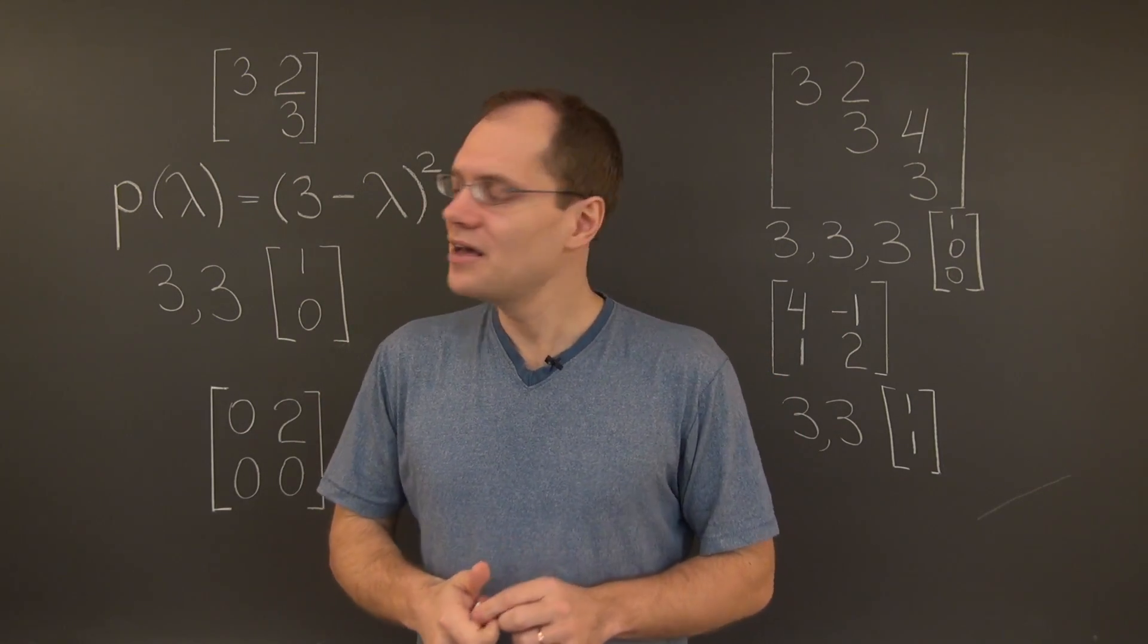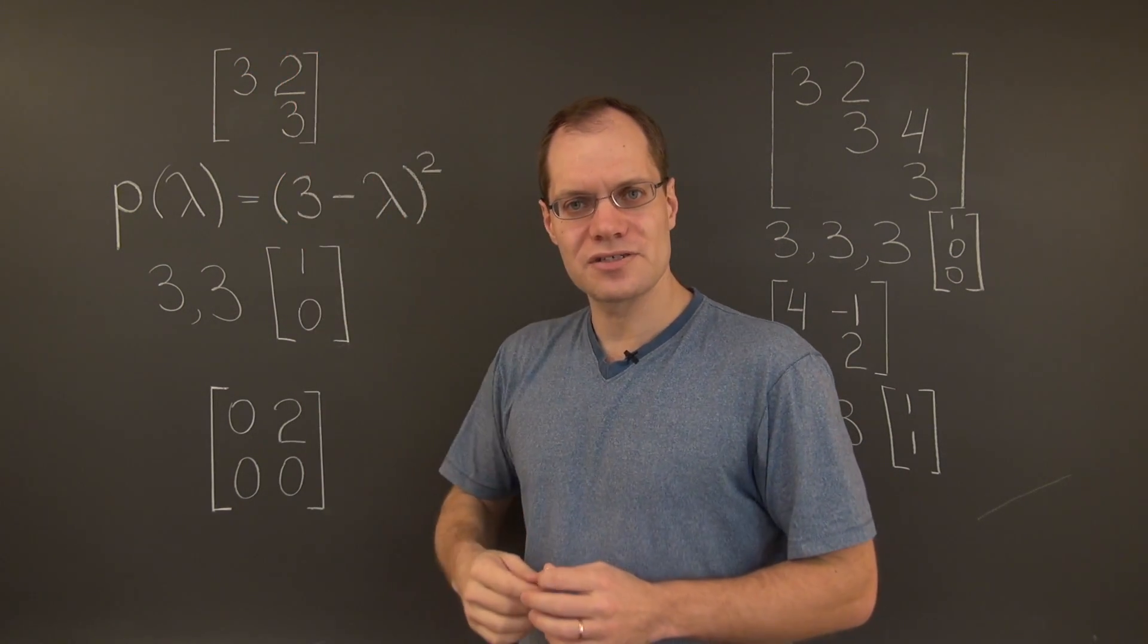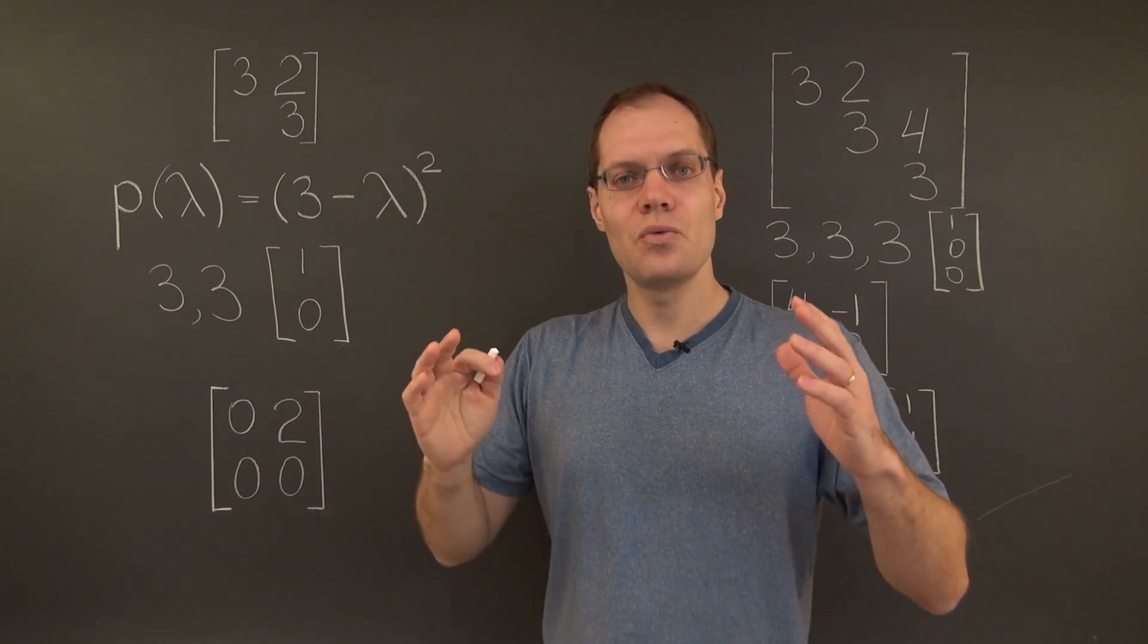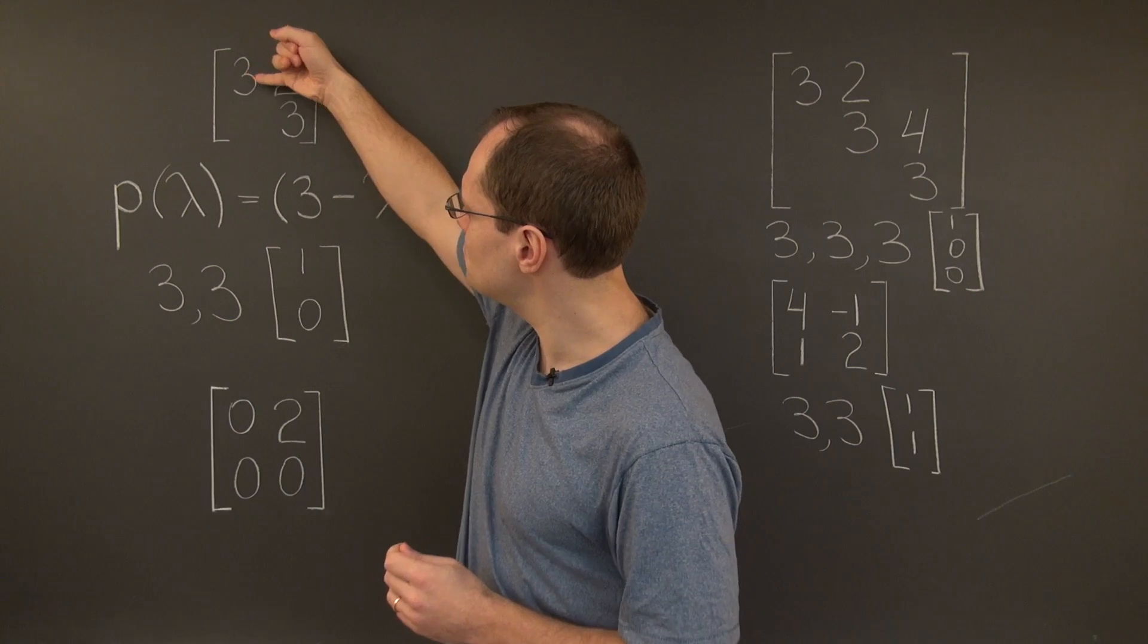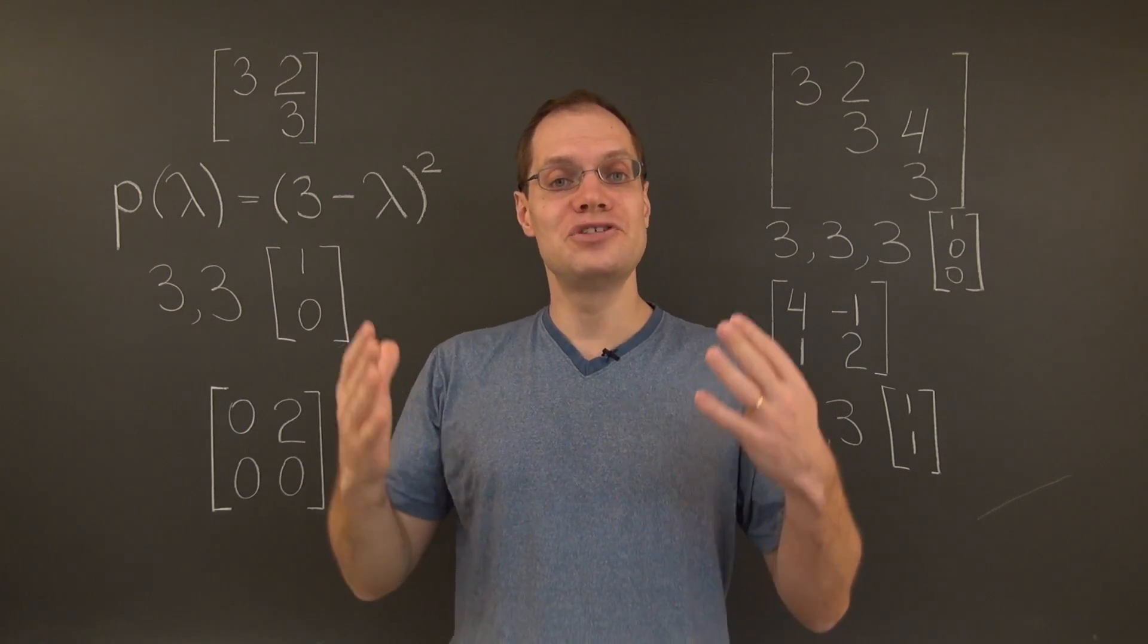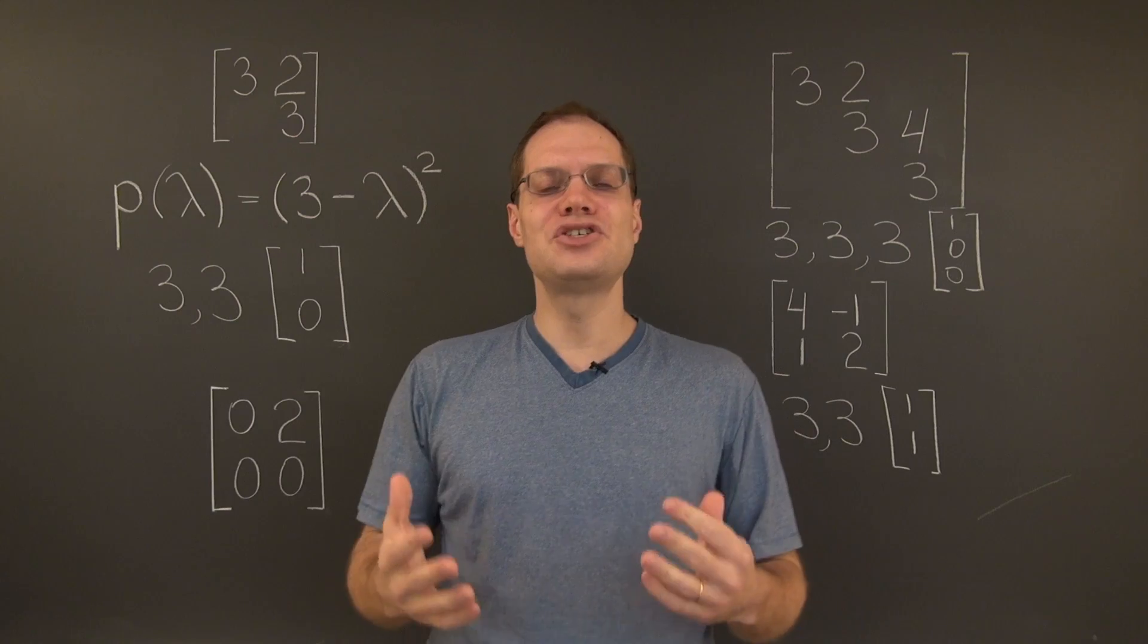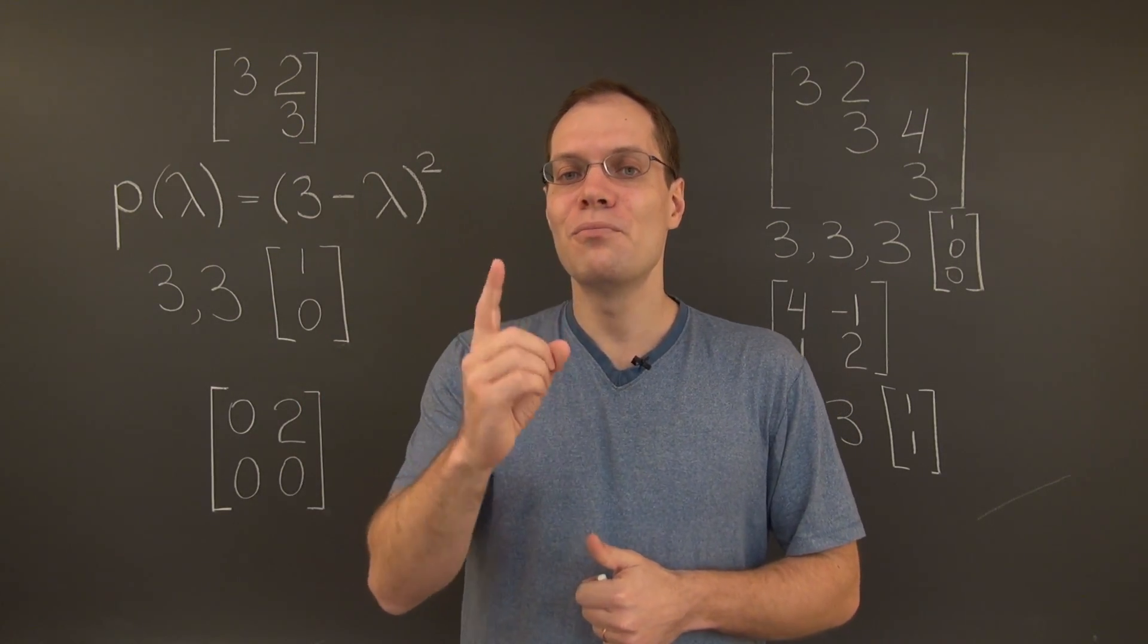The property of being defective is very fragile. Here's what I mean by that. If we were to change just about any entry in this matrix by just a little bit, the resulting matrix will no longer be defective. It's easy to see if you were to change one of these 3's by a little bit. 3 will no longer be a double eigenvalue. We will have two different eigenvalues, even if it's by a little bit, and two linearly independent eigenvectors.